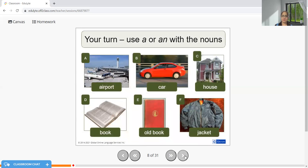Now let us try together where do we need to use 'a' or 'an'. An airport, a car, a house, a book, an old book. Please remember we are using the adjective 'old' which starts with O, a vowel, therefore I am using 'an'. If the sentence would be 'I am using book', then I can say 'a book', but if it has an adjective 'old', I have to put 'an' because O is a vowel. The last one is a jacket.